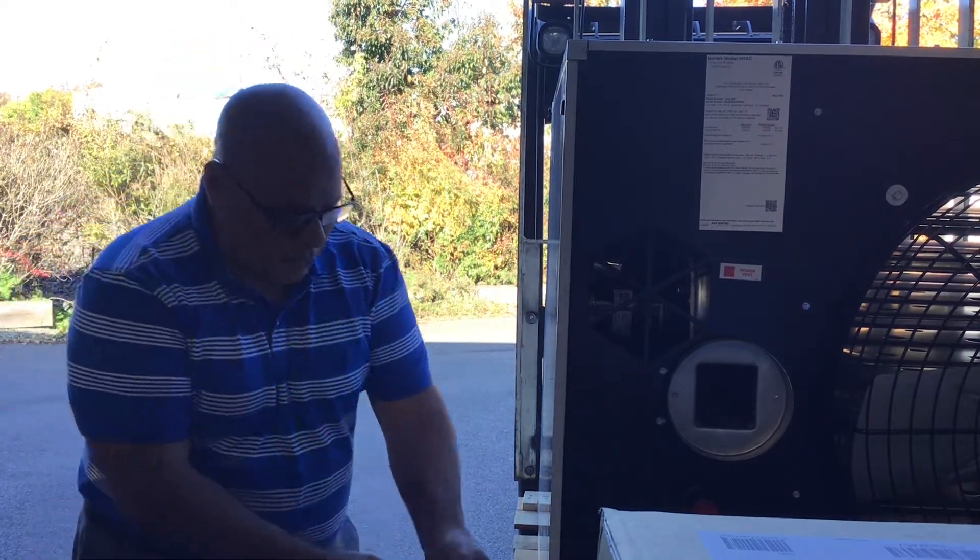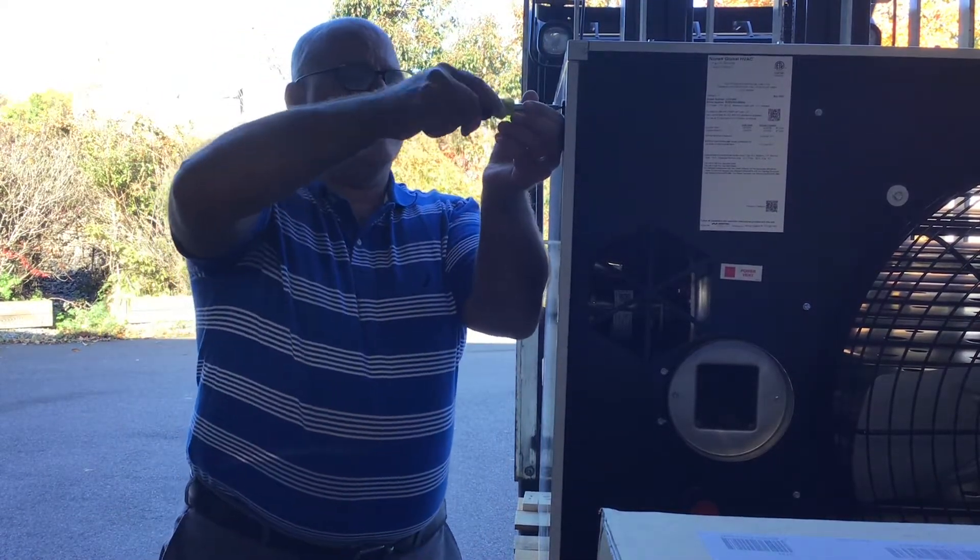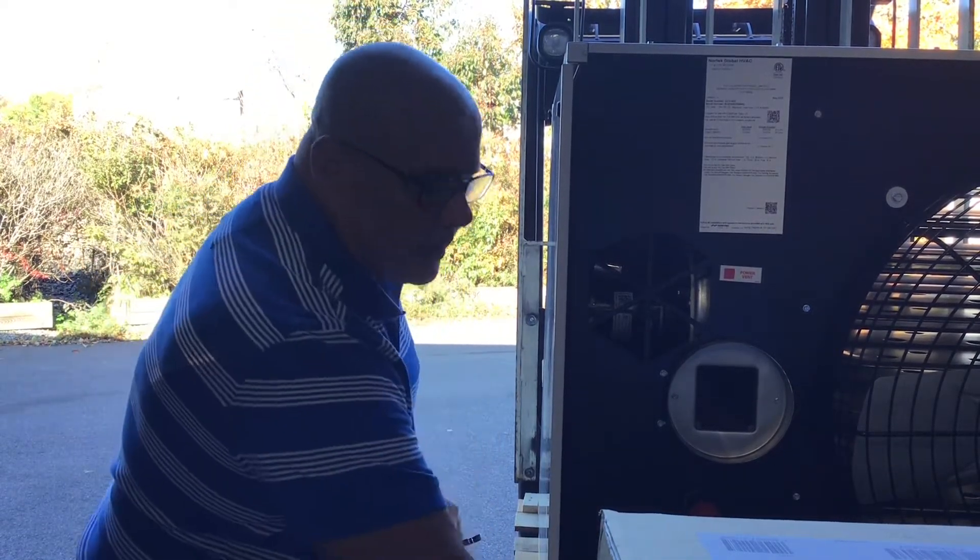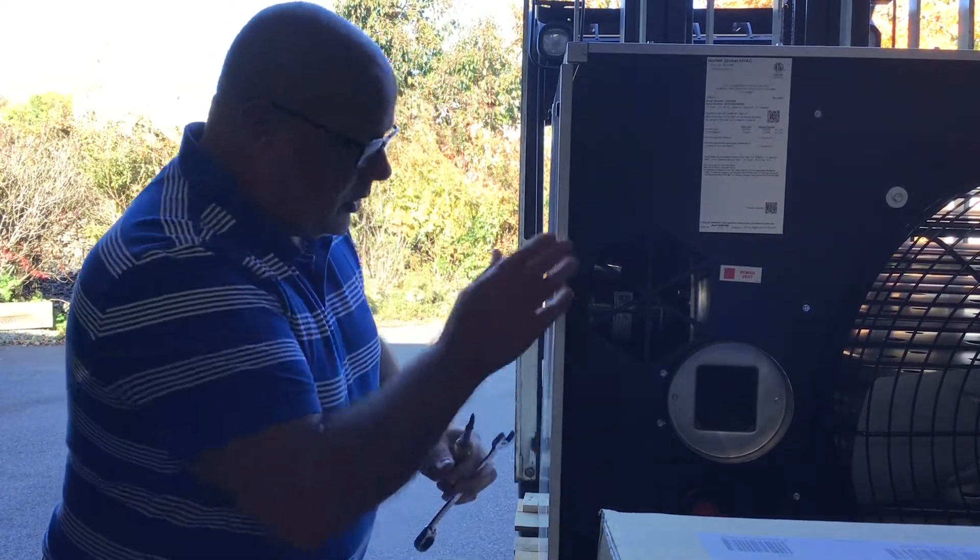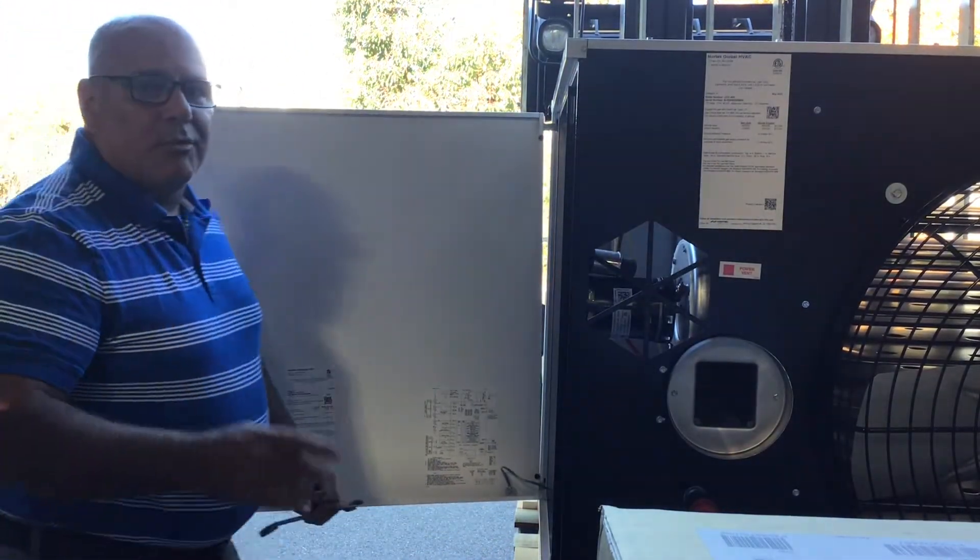First thing we're going to do is open the cover. The tools you're going to need this morning are very basic: screwdriver, 11 sixteenths wrench and a needle nose pliers. Open the cover and it would be my suggestion to do this before you hang it, it makes life a little bit easier.